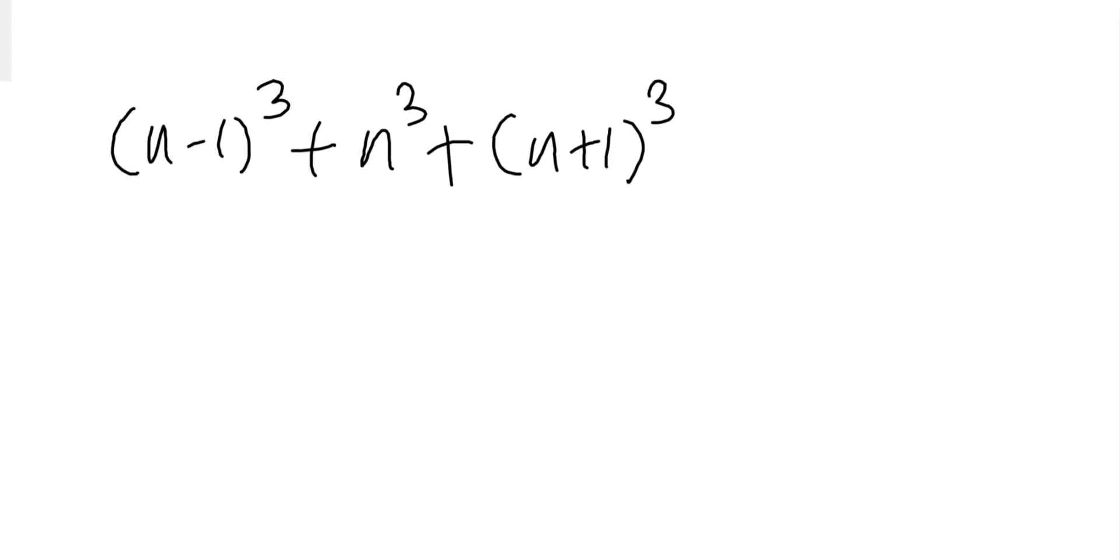Okay, so if you simplify this you will get 3n³ + 6n. Now taking common 3n, we can write this as n² + 2.